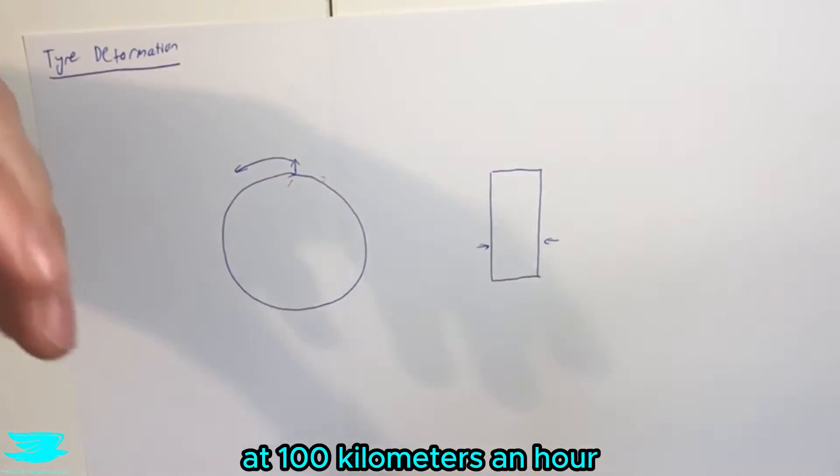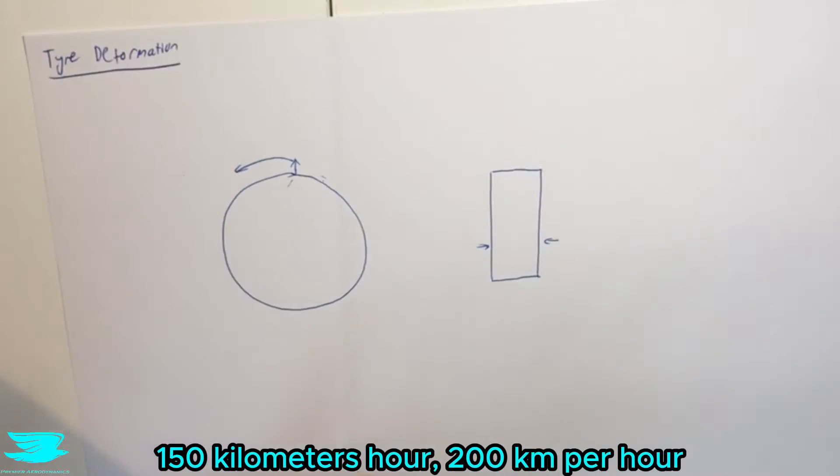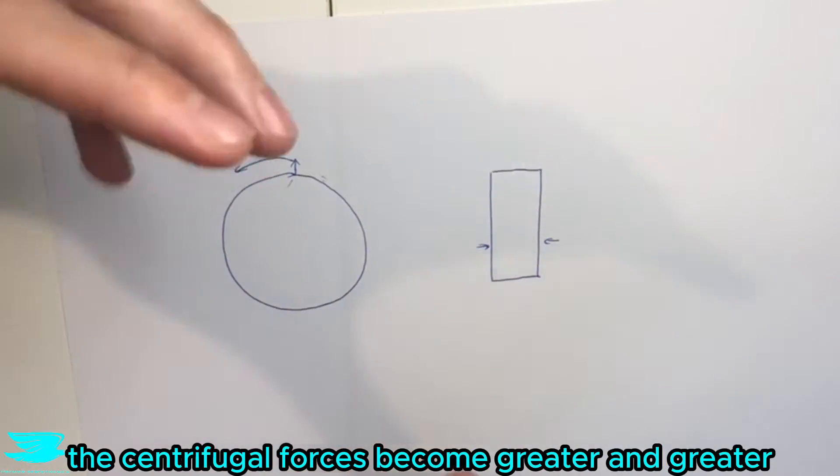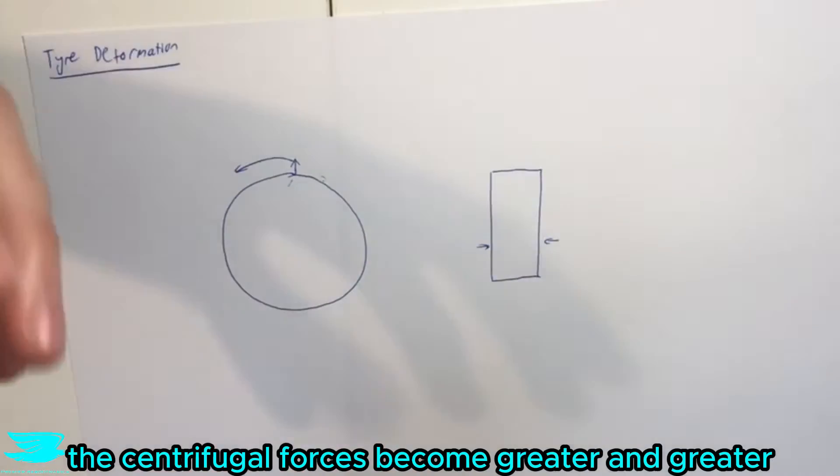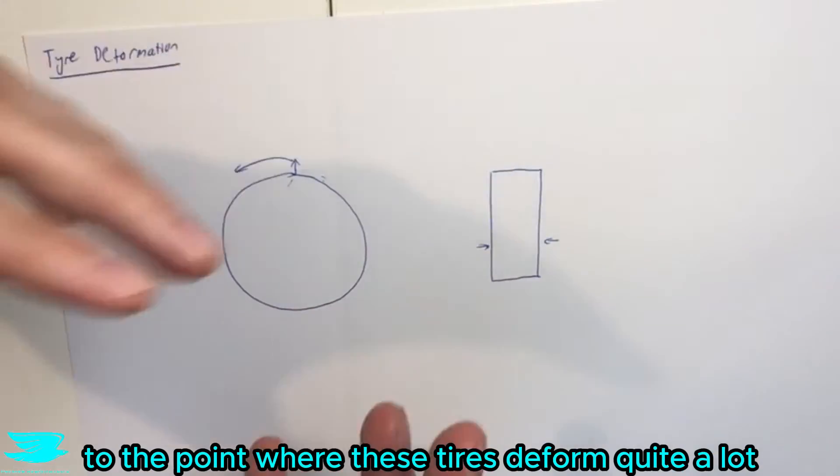So when you are going at, let's say, 100 kilometers an hour, 150 kilometers an hour, 200 kilometers per hour, these centrifugal forces become greater and greater to the point where these tires deform quite a lot.